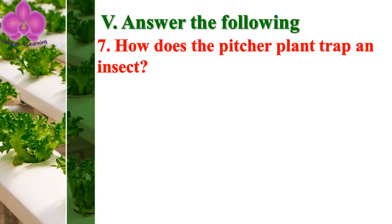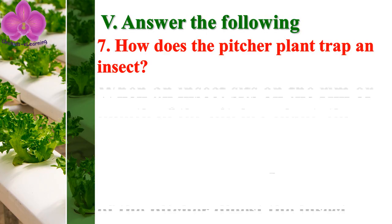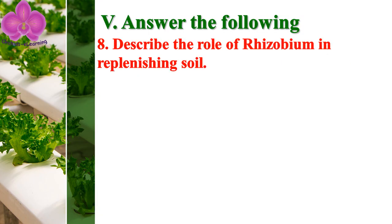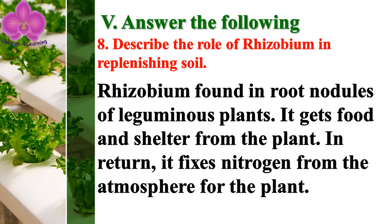How does the pitcher plant trap an insect? When an insect sits on the rim or mouth of the pitcher plant, the hairs inside the pitcher direct the insect downward, where enzymes present in the digestive juices digest the insect. Describe the role of rhizobium in replenishing soil: rhizobium, found in the root nodules of leguminous plants, gets food and shelter from the plant and in return fixes nitrogen from the atmosphere for the plant.